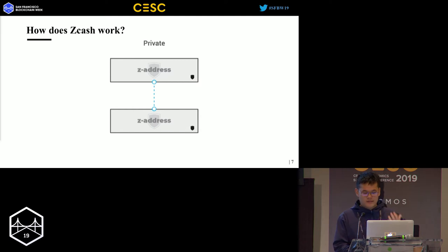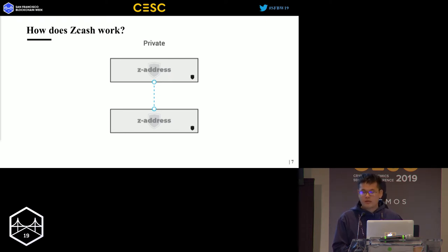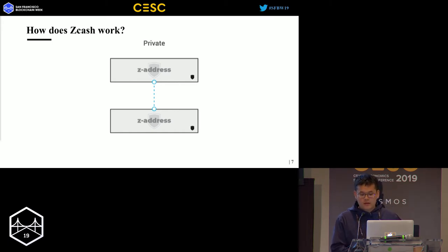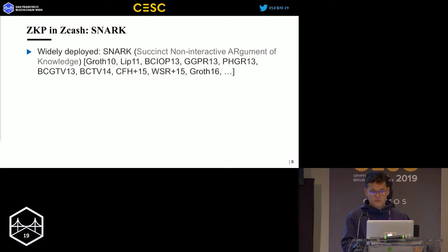So here, zero-knowledge proofs come in. In Zcash, a transaction appears on the public blockchain — it is known to have occurred and the fees were paid — but the addresses and the transaction amount are all encrypted and not publicly visible. Other nodes can still verify the transaction because of the soundness property and zero-knowledge property in zero-knowledge proofs. In Zcash, they use a specific zero-knowledge proof called zk-SNARKs.